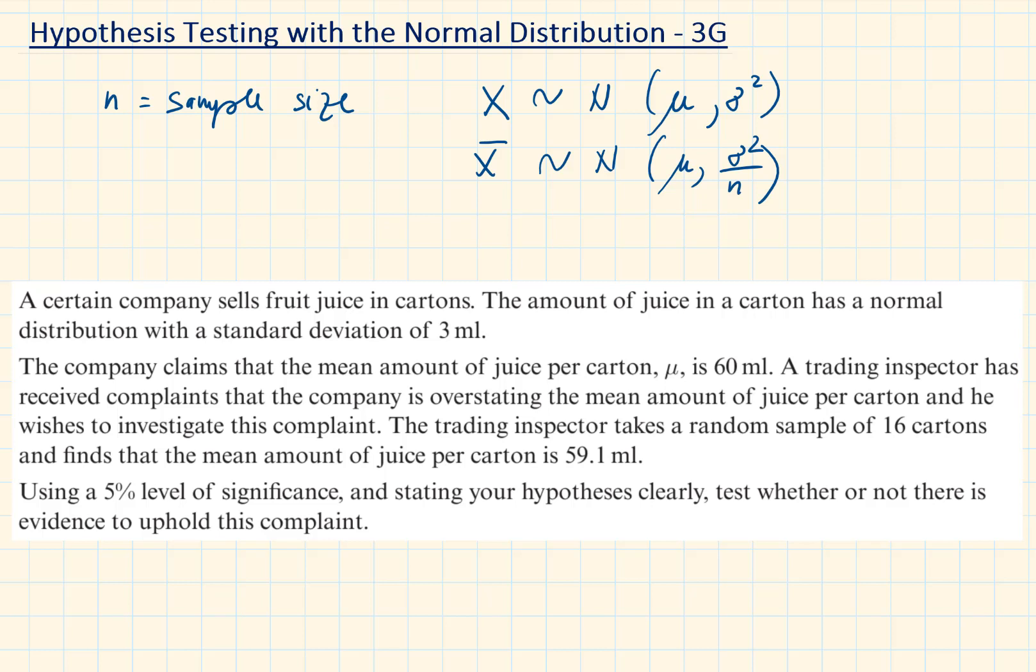We are going to use the distribution of the x bar to determine whether a sample mean is statistically significant or not. What we mean by statistically significant is whether this mean is significantly different from the population, or that difference is only due to chance. Let's go to an example to understand this.